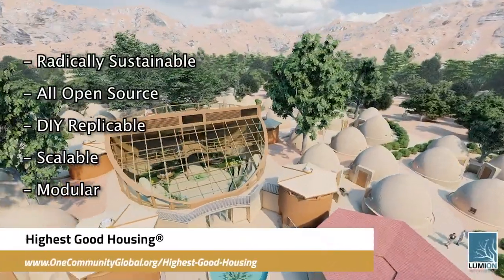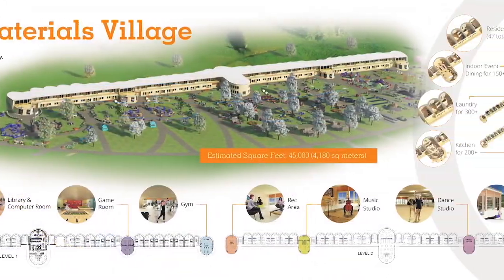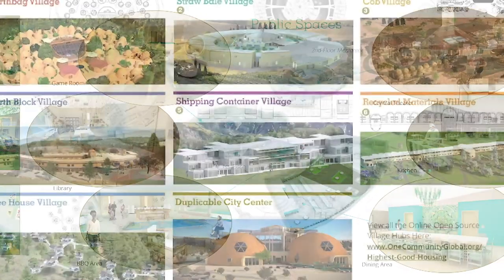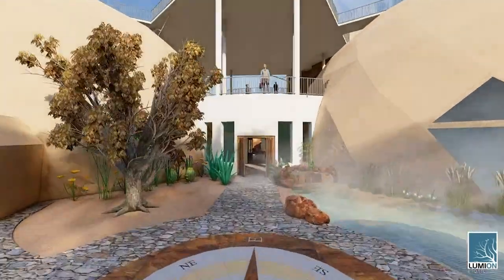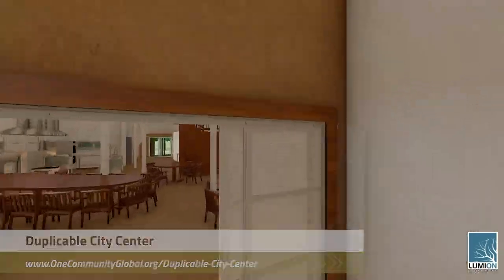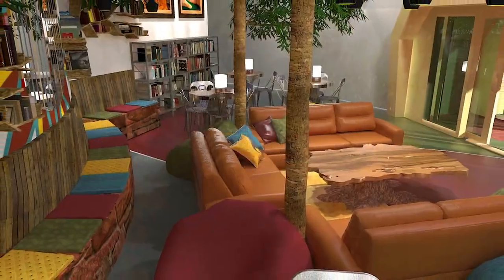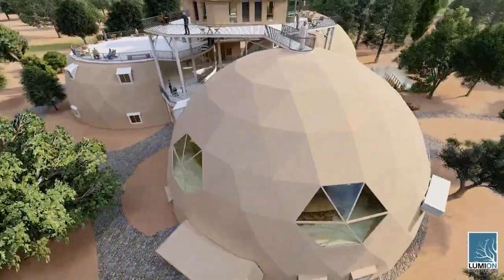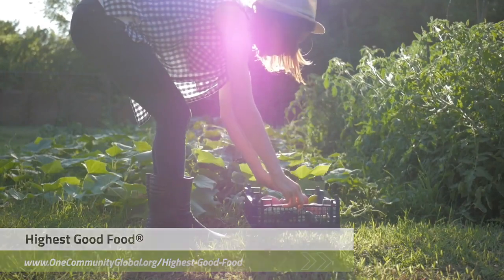The One Community approach to highest good housing is eco-artistic home building that is affordable, sustainable, do-it-yourself duplicable, resource and space efficient, and consists of seven different sustainably constructed village models. One Community is also creating an open source duplicable city center designed to be LEED Platinum certified, provide 12 guest rooms, dining for over 150 people, and laundry and recreation space for over 300 people — all while saving money, time, space, and resources.